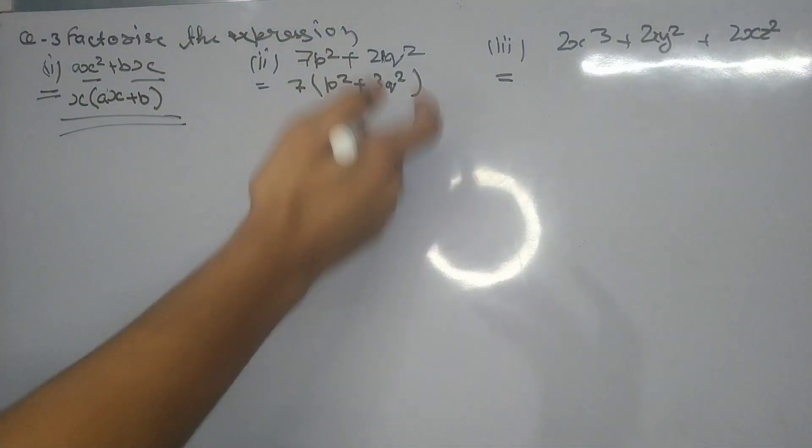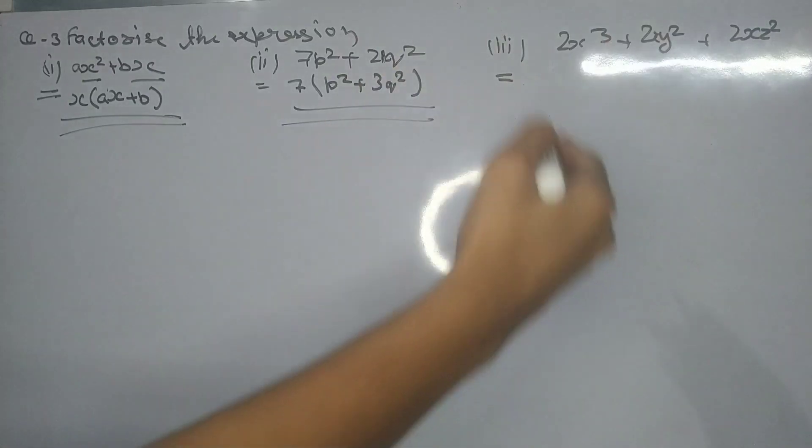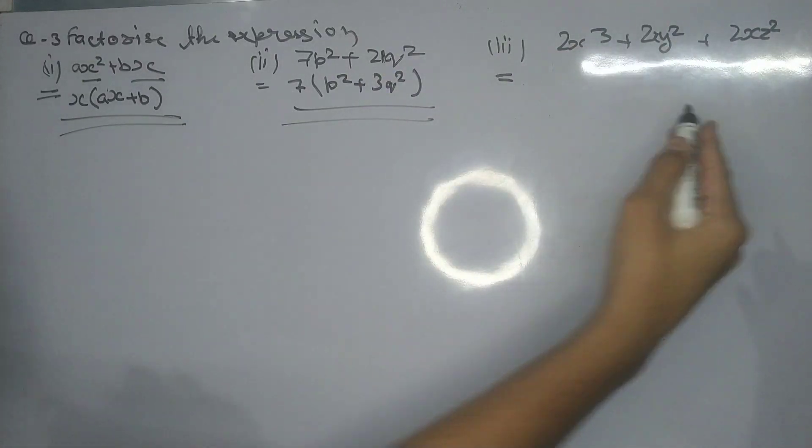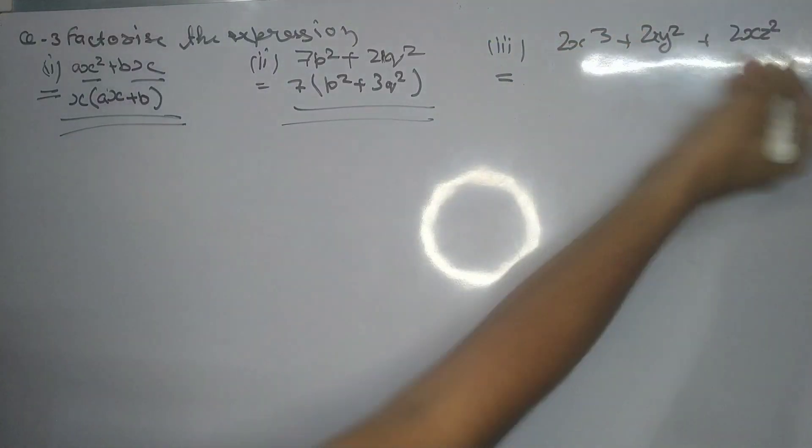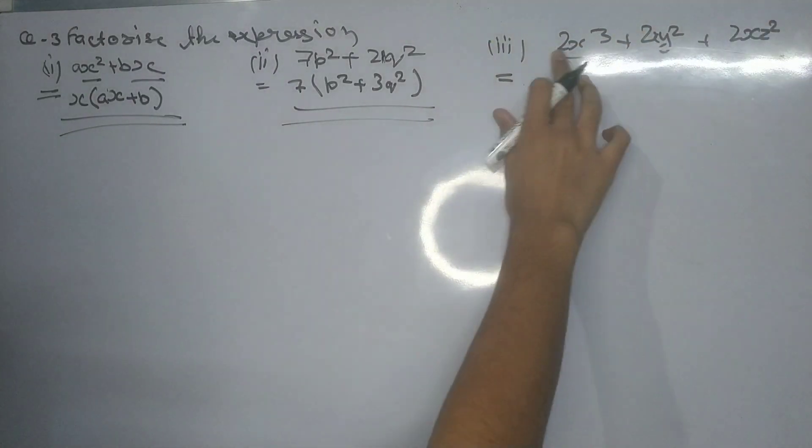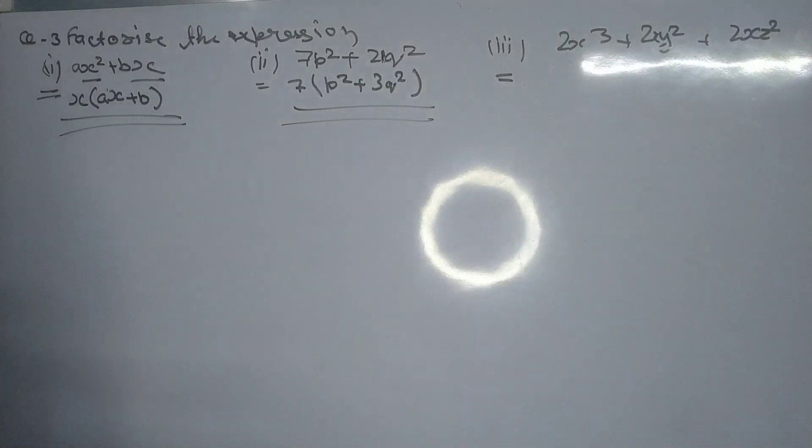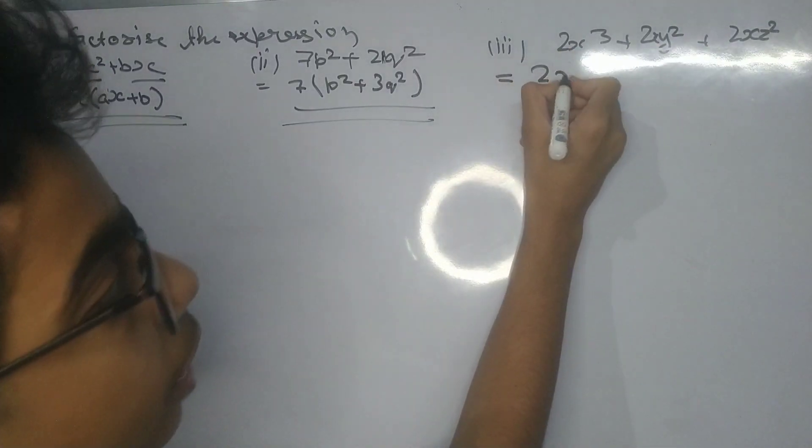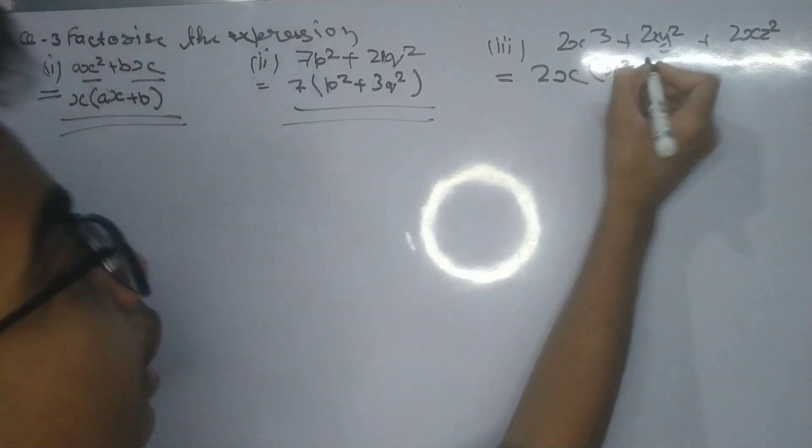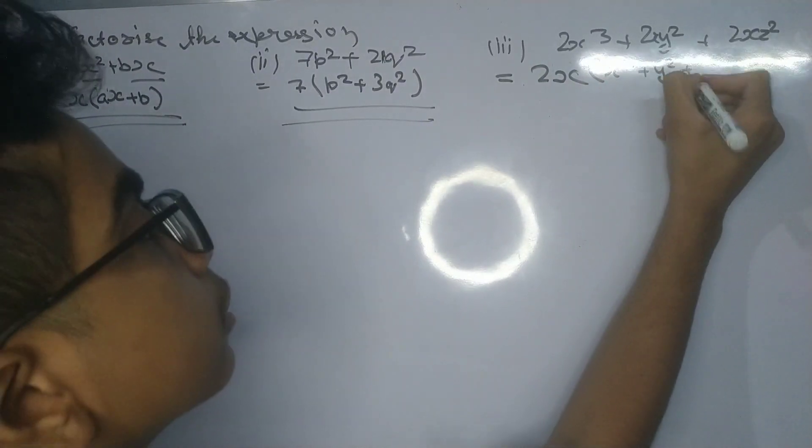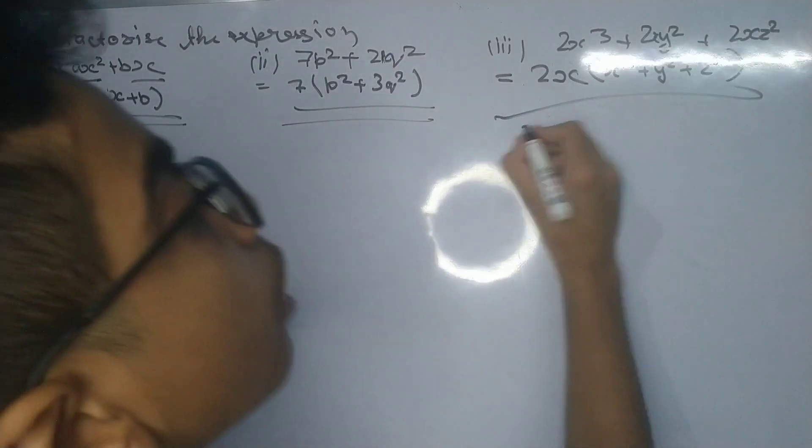Now coming to part (iii), which is 2x cubed plus 2xy squared plus 2xz squared. The x is common in all three terms, as well as 2 is also common. So we will take 2x outside and write x squared plus y squared plus z squared. That's all for this part.